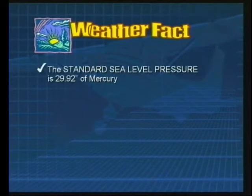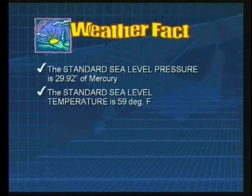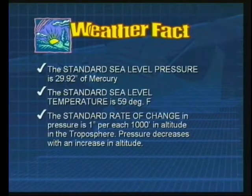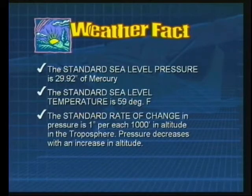Here's a weather fact for you. The standard sea level pressure is 29.92 inches of mercury, or about 1013 millibars. The standard sea level temperature is 59 degrees Fahrenheit, or 15 degrees Celsius. The standard rate of change in pressure is about 1 inch of mercury per 1,000 foot gain in altitude in the troposphere. Pressure decreases as you increase in altitude — simply stated, the further you go up, the more the barometer drops.